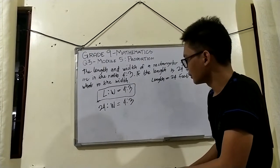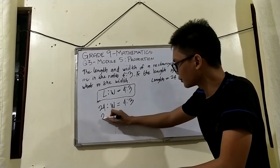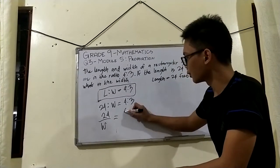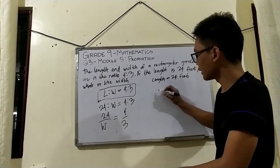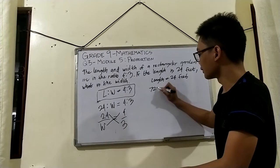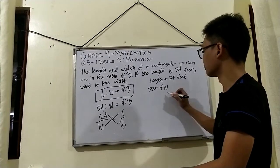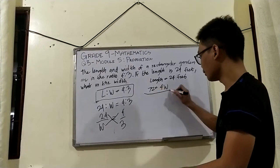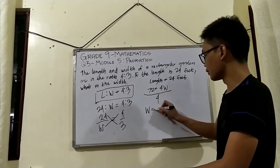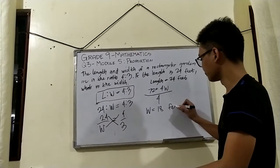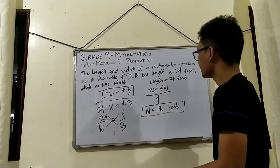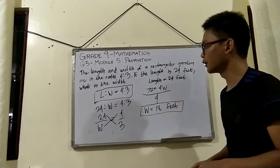We transform into fractional form: 24 over W is equal to 4 over 3. Then we cross multiply and we have 72 equals 4W. Dividing both sides by 4, we get W is equal to 18 feet. So 18 feet is the width of our rectangular garden.